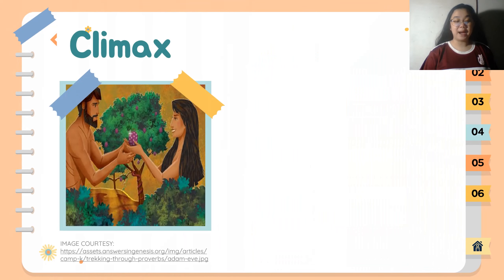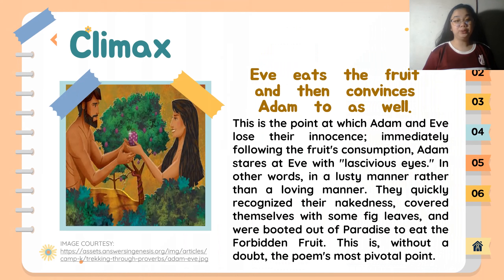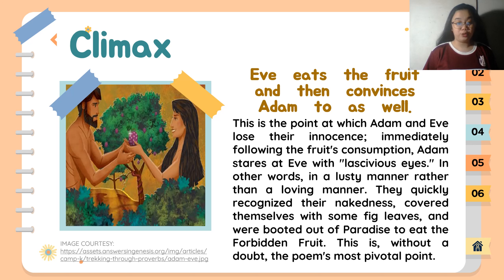For the climax, Eve eats the fruit and then convinces Adam to eat as well. This is the point at which Adam and Eve lose their innocence. Immediately following the fruit's consumption, Adam stares at Eve with lustful rather than loving eyes. They quickly recognize their nakedness, cover themselves with fig leaves, and are expelled from paradise for eating the forbidden fruit. This is, without a doubt, the poem's most pivotal point.